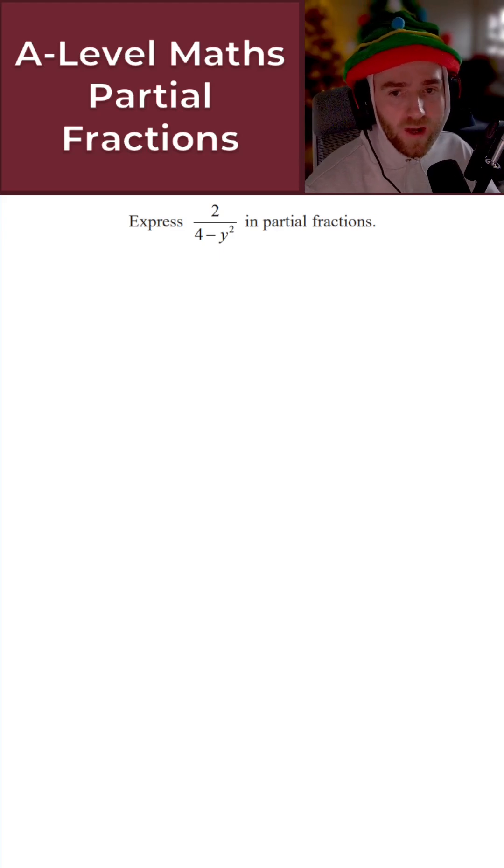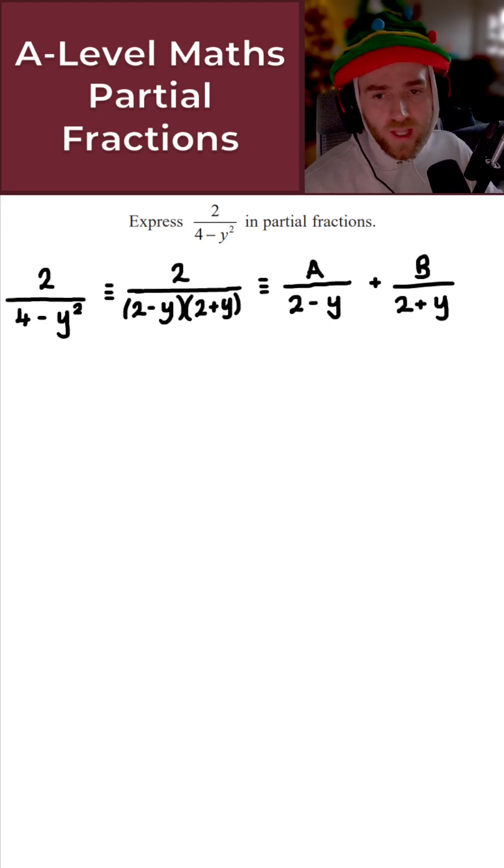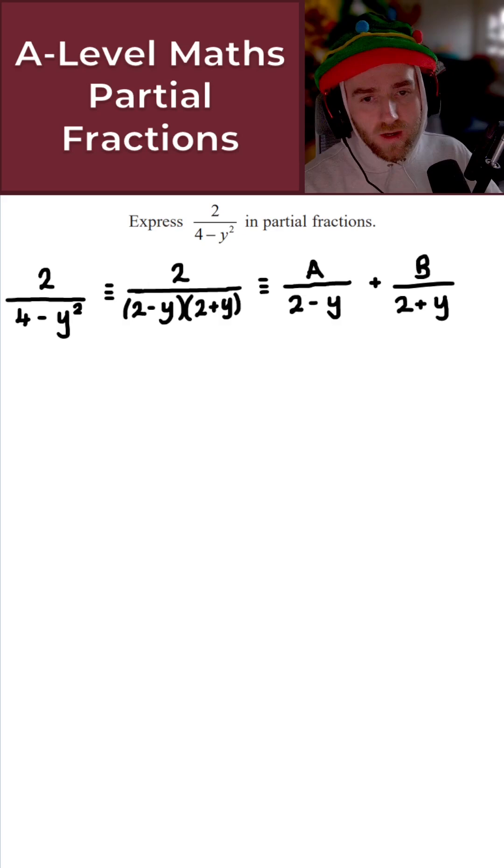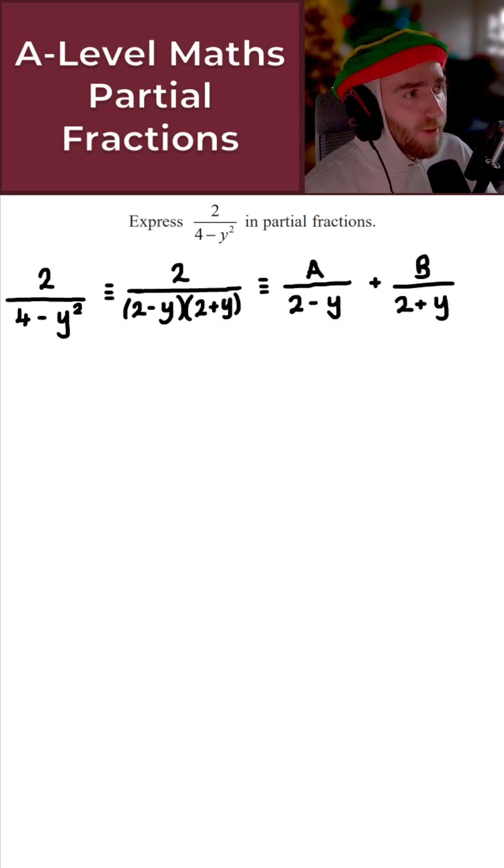To begin, let's rewrite the denominator because the denominator here is a difference of two squares. What we'll also do is express this in partial fraction form. So let's start by rewriting the denominator. That would give us this here. And then if we express this in partial fraction form, we obtain this here.